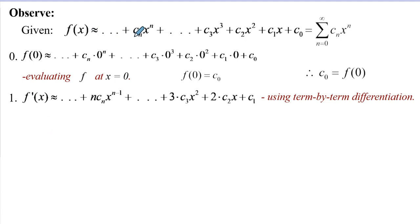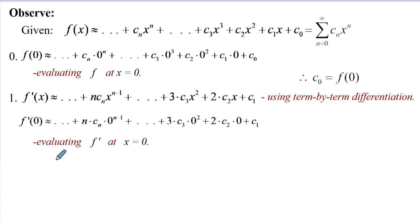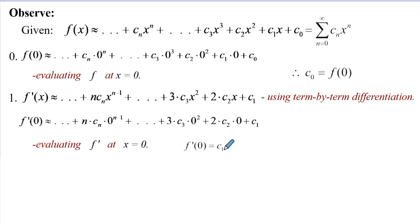Moving forward, we can now differentiate the function using term-by-term differentiation, applying the power rule to each term. The first term becomes c_1 because the constant differentiates to zero. Evaluating the first derivative at 0, substituting x = 0, all other terms vanish, resulting in f'(0) = c_1. So the coefficient at x^1 is actually the value of the first derivative of the function at 0.